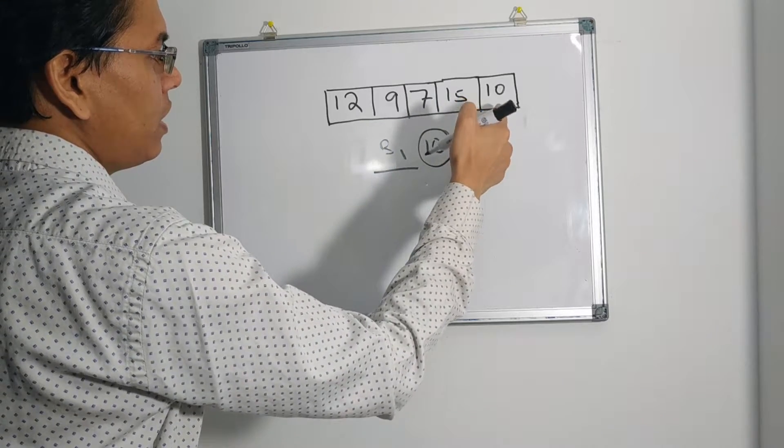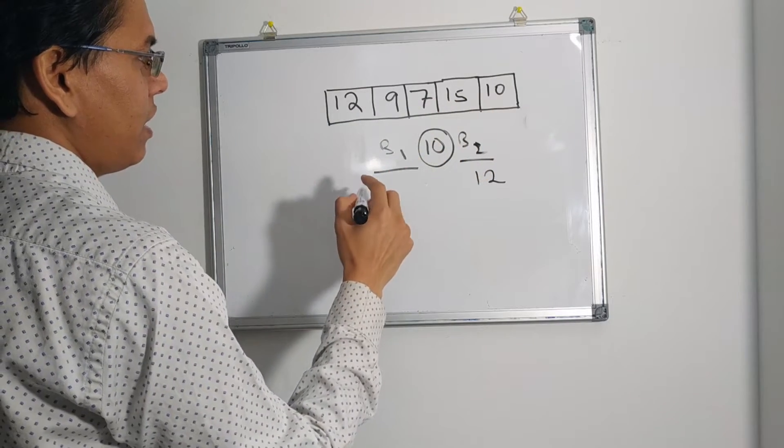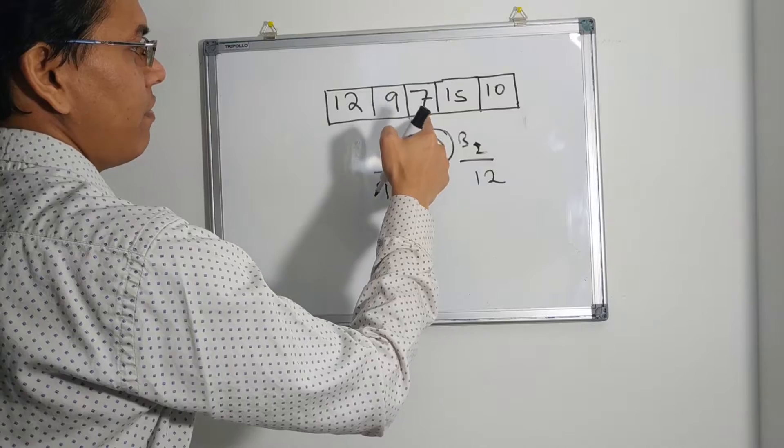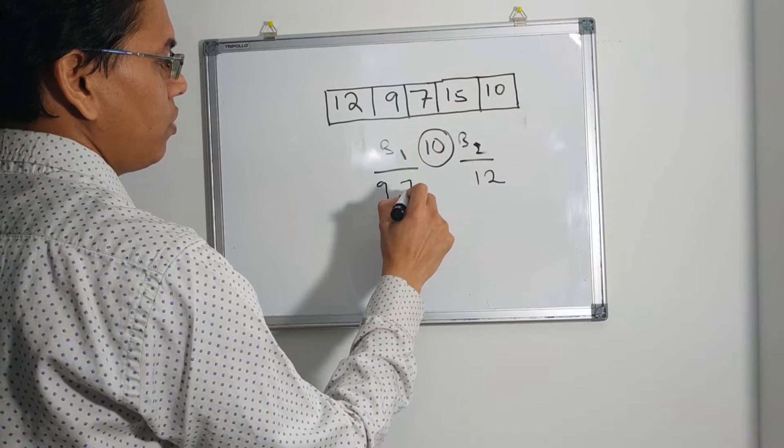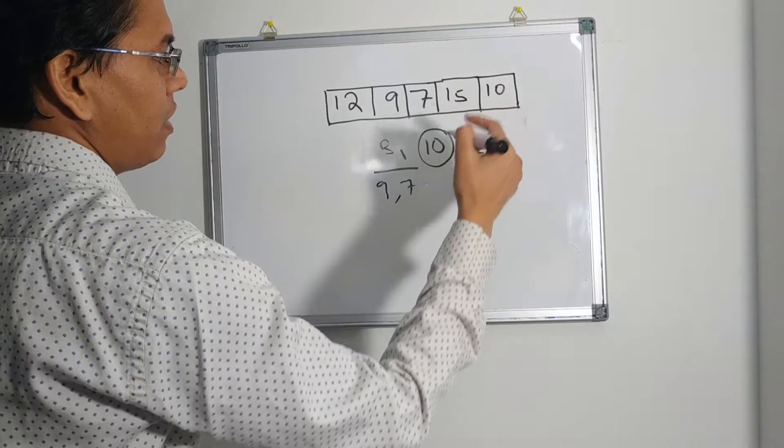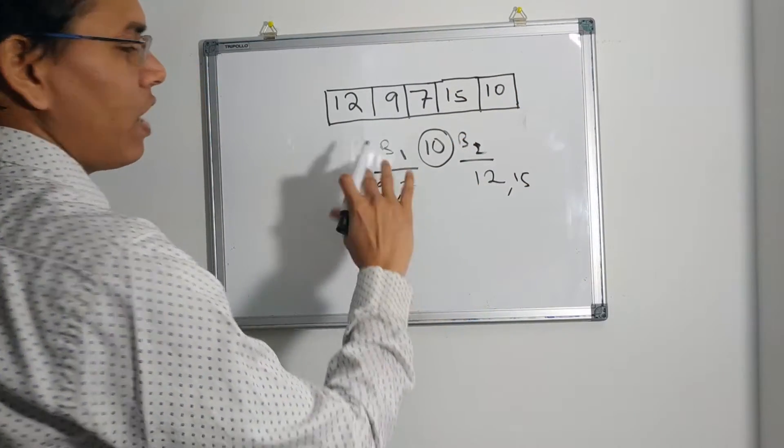12 is greater than 10, so we will put it in B2 bucket. 9 is less than 10, so we will put it into B1 bucket. 7 is less than 10, so we will put it into B1 bucket again. 15 is greater than 10, so we will put it into B2 bucket. Finally we are done.